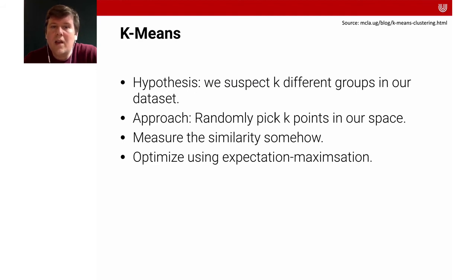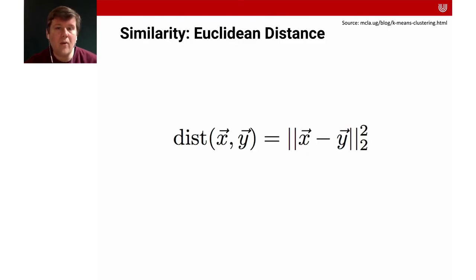So let's recap what I told you. We have a hypothesis in this particular setting, and that's that we suspect that there are k different groups in our data. And our approach is to randomly pick k points in our space, then measure the similarity somehow, and then optimize it using expectation maximization. And that's an important machine learning algorithm and it's a way of optimizing the number of clusters for k-means. For similarity, we will consider the Euclidean distance here. You should all know that, it's just the distance in a coordinate system and it's just how far apart the different points are from each other. There are a variety of other similarity metrics. We will learn about Kullback-Leibler divergence for instance. But here for this simple example we will stick with the Euclidean distance.